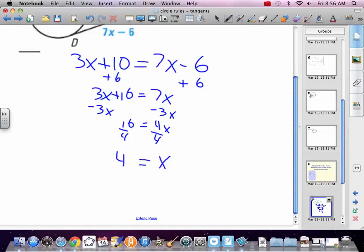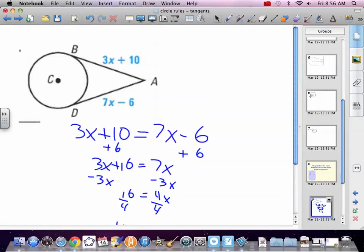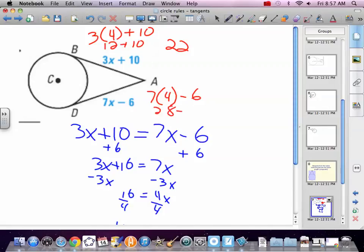Now we're actually not done, because they didn't just say find x. They said find the length. So now that you know x is 4, let's use it. 3 times 4 plus 10. 12 plus 10. 22. Awesome. They should be the same. Let's double check our answer. We've got another equation to use x with. 28 minus 6 is 22. Okay. So we did it right. They're both 22 in length.